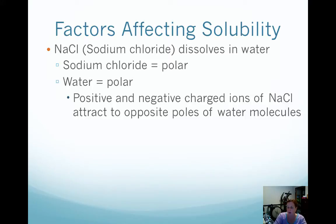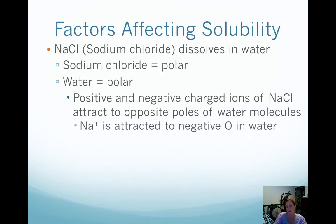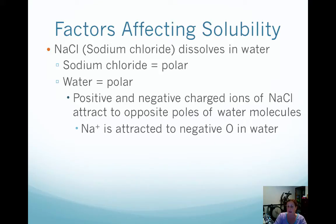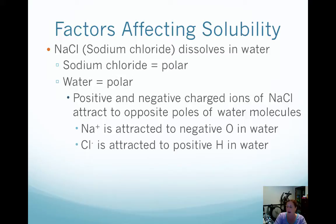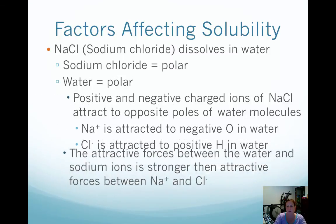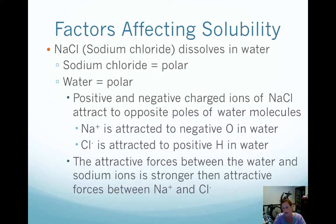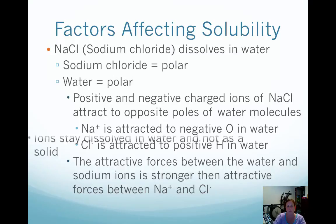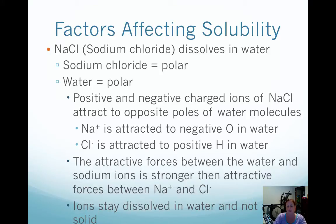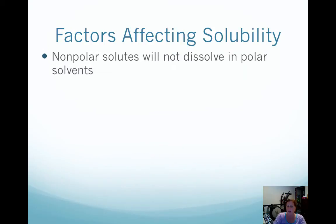Polar particles have a plus side and a minus side, and they attract each other within the solution. Sodium is a positive ion — it's attracted to the negative oxygen in the water. Chlorine is a negative ion, and it's attracted to the positive hydrogen in the water. It works like magnets: positive ends attract negative ends. The attractive forces between the water and sodium ions are stronger than those between the sodium ion and the chlorine ion, so they dissolve within the solution. The ions stay dissolved in the water, and the salt does not remain as a solid.